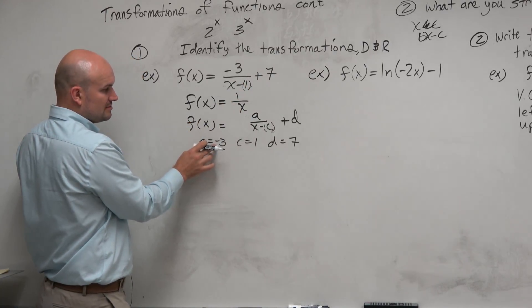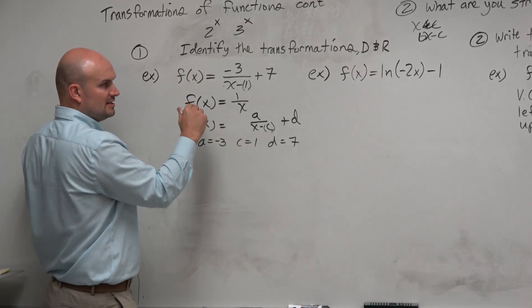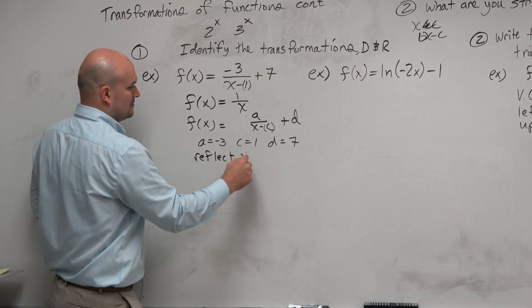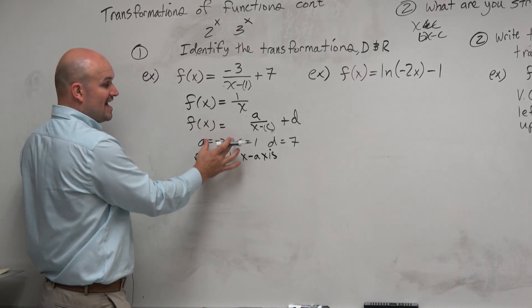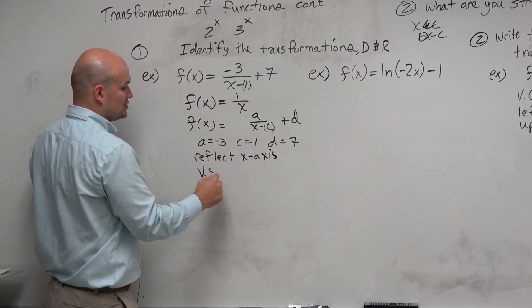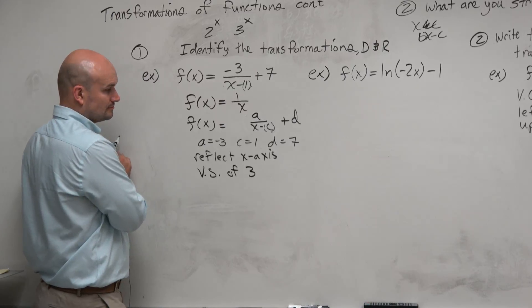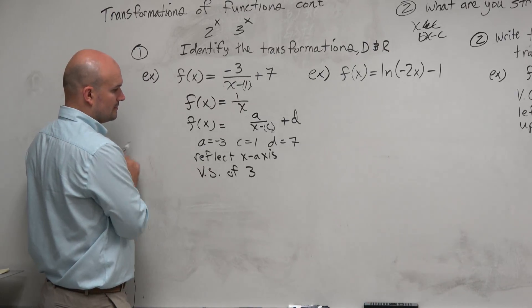So when a is negative, so automatically I see a. I say, oh, in my notes, a when it was less than 0, OK, that's a reflection of the x-axis. When a, the absolute value of a, is greater than 1, that is a vertical stretch of 3.